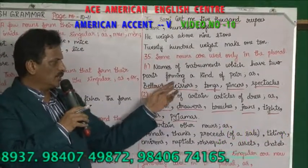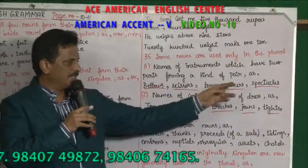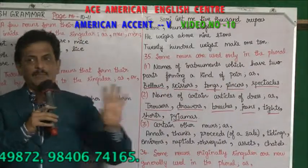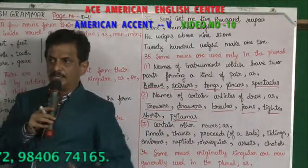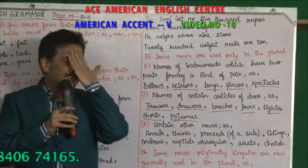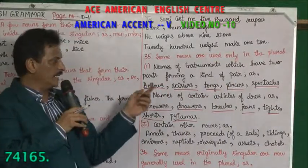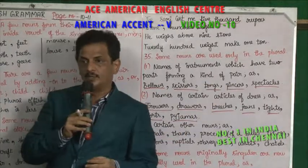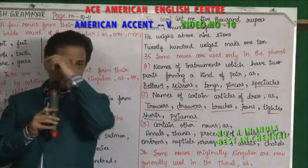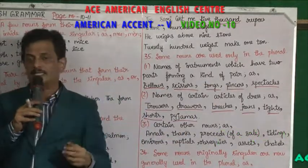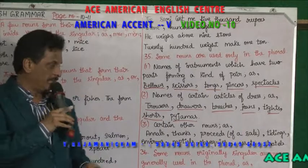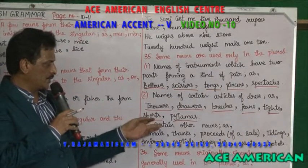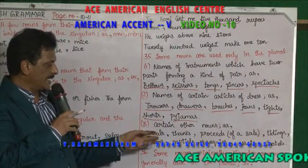Bellows, scissors, tongues, pincers, spectacles — these are all used only in plural form. You cannot say scissor or spectacle in singular. These are instruments that come as a pair, so they take the plural form.